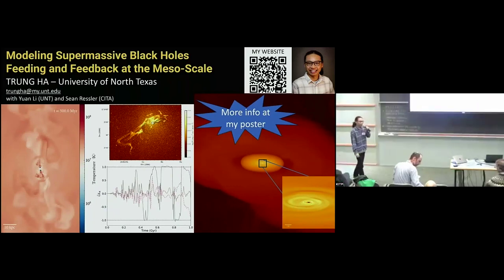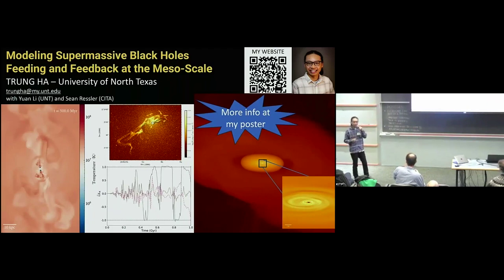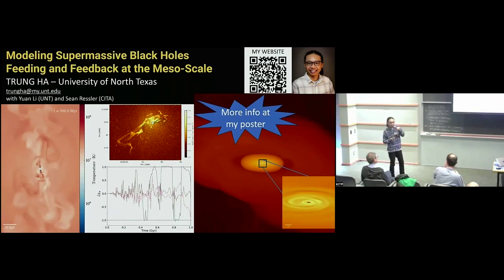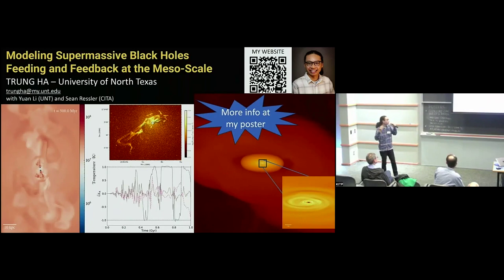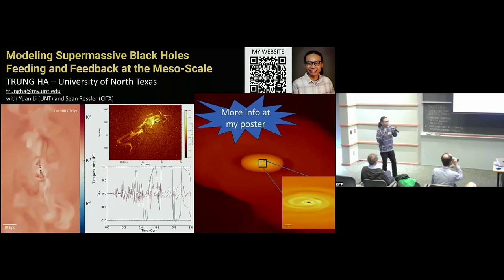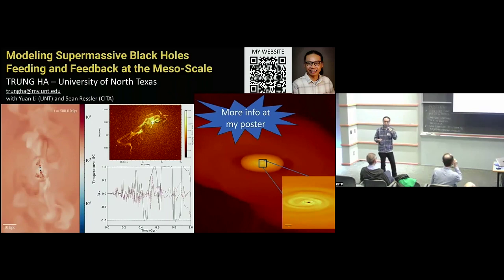Hi everyone, my name is — I am a fourth-year PhD student at the University of North Texas working with Yuan Li, and I'm here to advertise my poster. From observation we know there is multi-phase gas at the accretion flows at the center of elliptical galaxies. In these quiescent systems such as M87, the AGN jet from the center of the supermassive black hole is the most important source of heating in the galaxies.